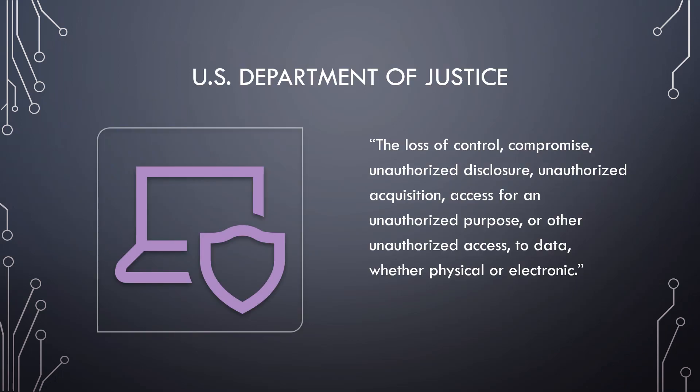The United States Department of Justice definition is the loss of control, compromise, unauthorized disclosure, unauthorized acquisition, access for unauthorized purpose, or other unauthorized access to data, whether physical or electronic.